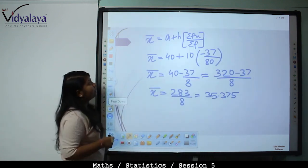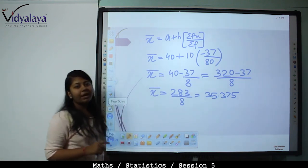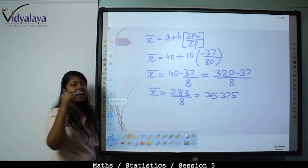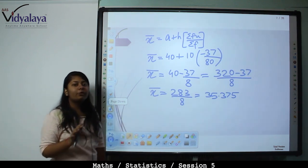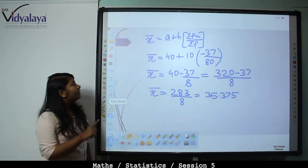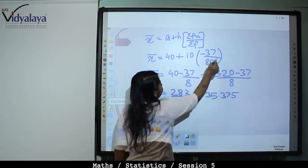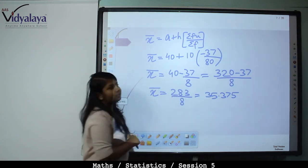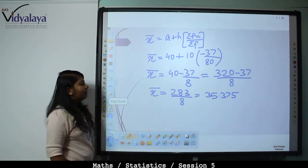Mean formula: x-bar equals A plus h into (summation FU upon summation f). It is important to keep all formulas in a separate notebook, chapter-wise. So x-bar equals 40 plus 10 into (minus 37 upon 80), which gives 40 minus 370 upon 80. Taking LCM: 320 minus 37 upon 8, which equals 35.375.